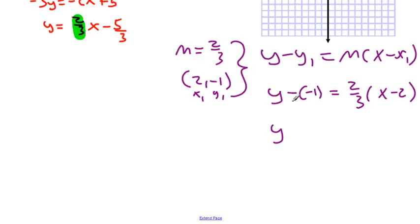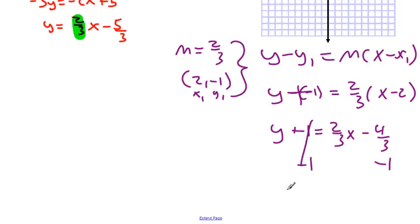Let's clean it up. y + 1 = (2/3)x - 4/3. Multiplying fractions, 2 times 2 gives us 4, so negative 4/3. Then subtract 1 from both sides. To subtract 1, we need a common denominator, so multiply 1 by 3/3 to get 3/3. So 4/3 - 3/3 = 1/3. Therefore y = (2/3)x - 7/3.